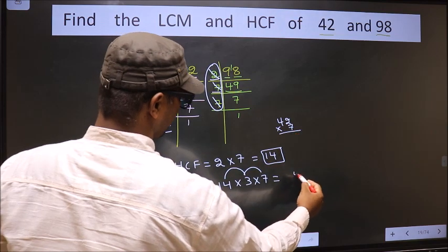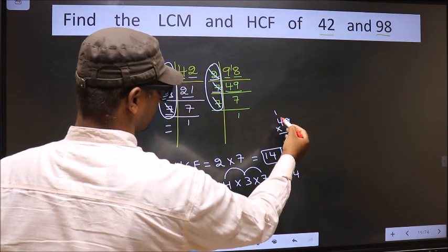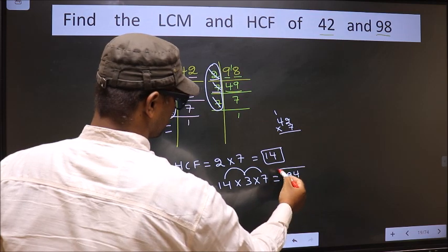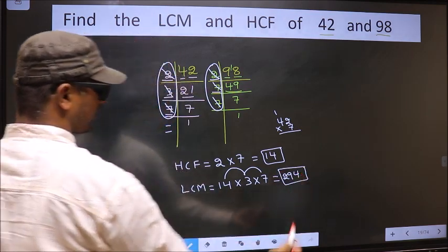7 times 2 is 14, 4, 1. 7 times 4 is 28 plus 1, 29. So 294 is our LCM.